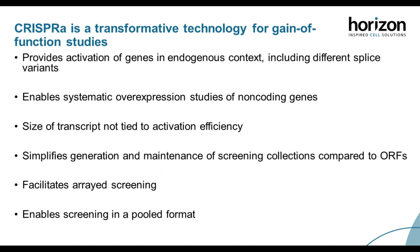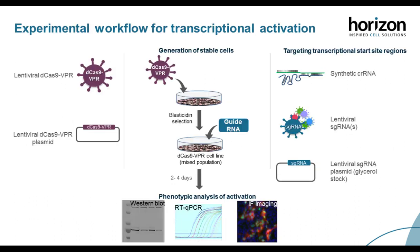Similar to gene knockout experiments, the workflow for CRISPR-A requires two basic components: the Cas9 nuclease and the guide RNA. For CRISPR-A, the two options for dCas9-VPR include either lentiviral particles or plasmids. The guide RNA can be a synthetic CRISPR-RNA and tracer RNA, lentiviral sgRNA particles, or plasmids. The recommended workflow is to generate stable cells and then deliver your guide RNA, followed by analysis using Western blot, RT-qPCR, and immunofluorescent imaging.